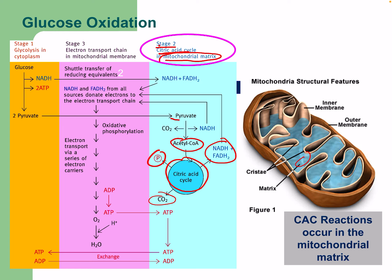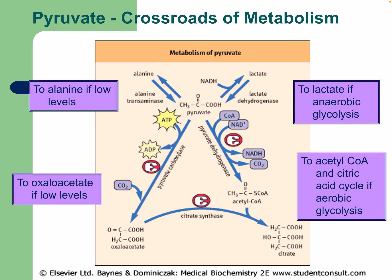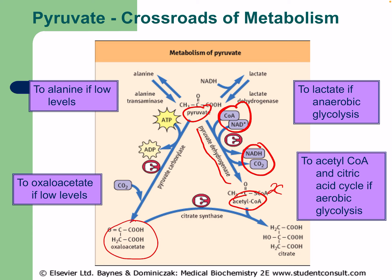Acetyl-CoA goes in — remember we get pyruvate that can go through pyruvate metabolism, and we can get our energy carriers NADH. The citric acid cycle reactions occur in the mitochondrial matrix. In the pyruvate dehydrogenase reaction, CoA and NAD+ go in and we produce NADH and CO2, forming acetyl-CoA (two carbons), which then condenses with oxaloacetate through citrate synthase forming citrate in the acid cycle.